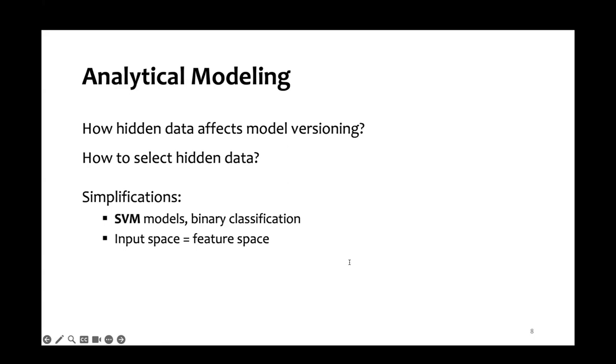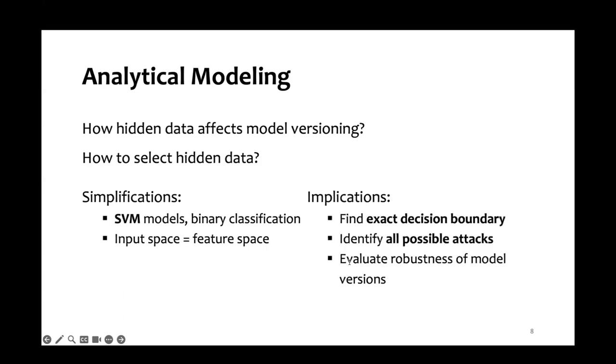In order to make this analytical modeling feasible, we make some simplifications. We look at support vector machines on binary classification tasks, and we also assume that the feature space is the same as the input space. With these simplifications, we are able to find the exact decision boundary for our model versions and identify all possible attacks. This allows us to evaluate the robustness of our model versions against compound transferability attack. Extensions to other settings are discussed in the paper.